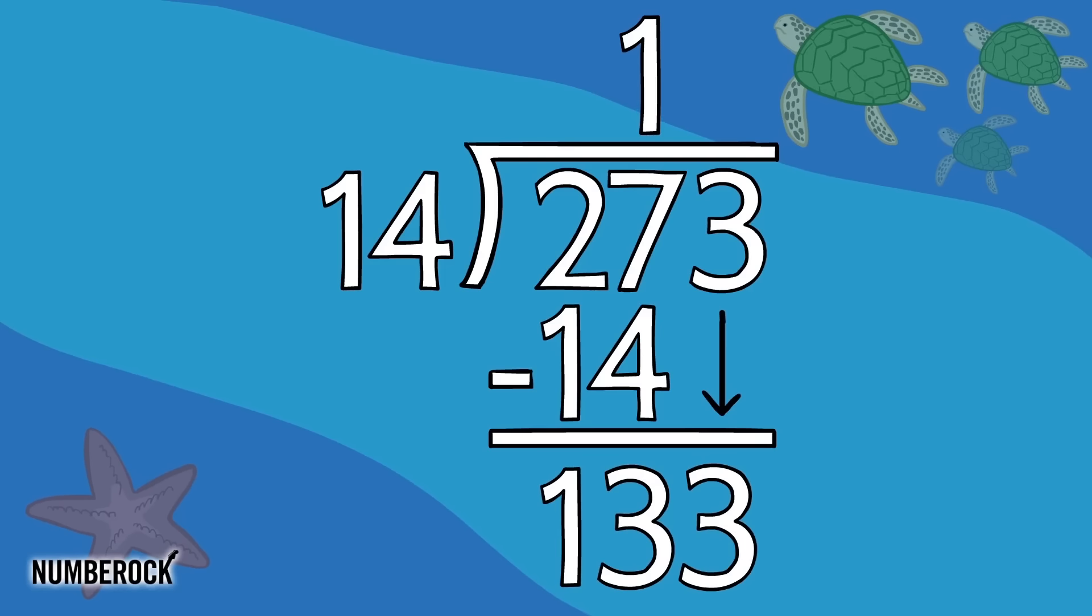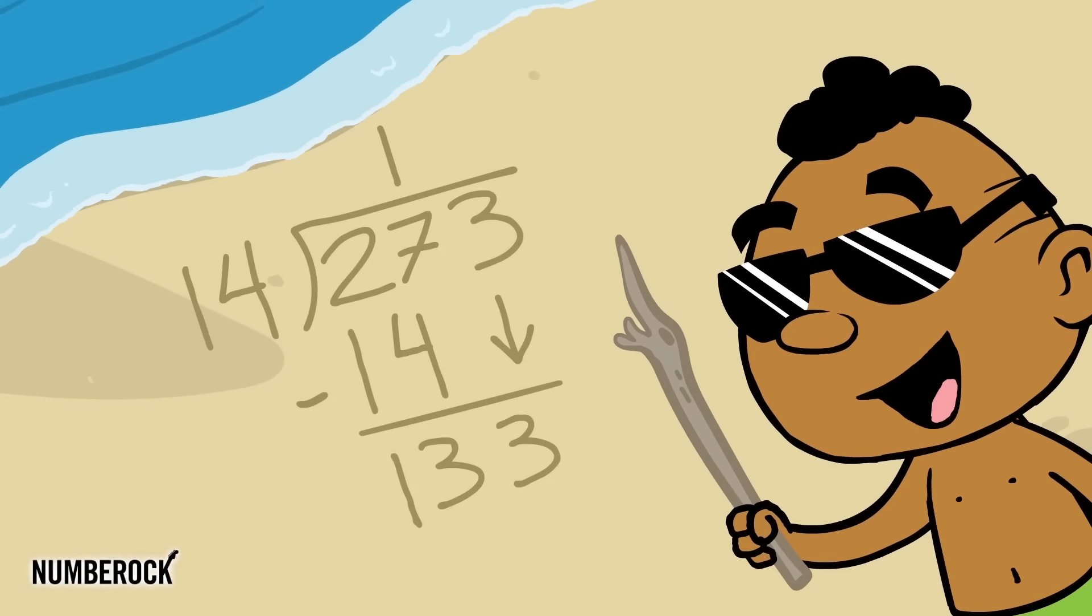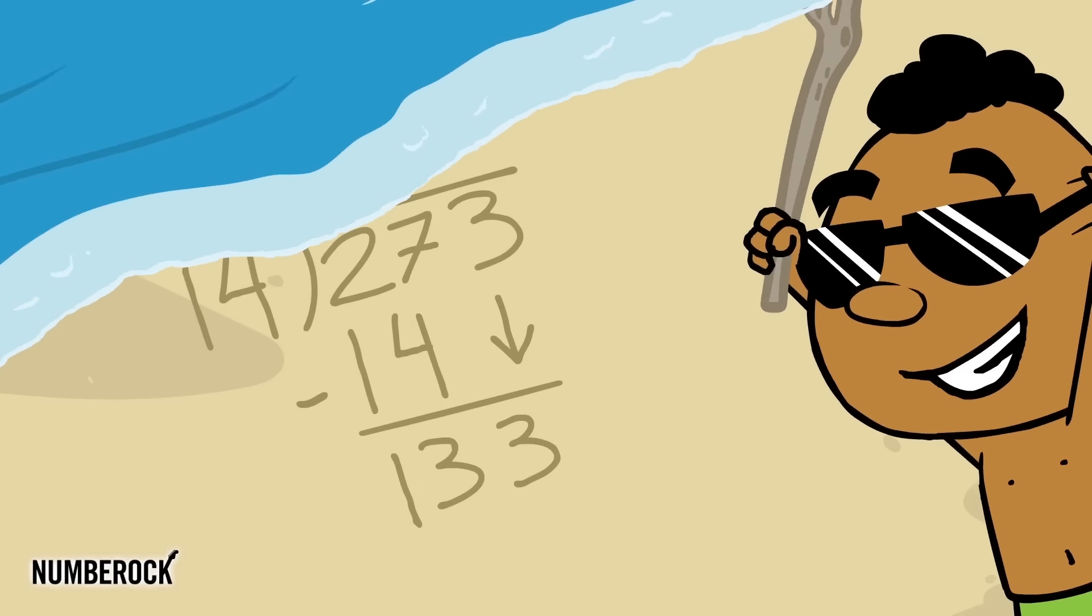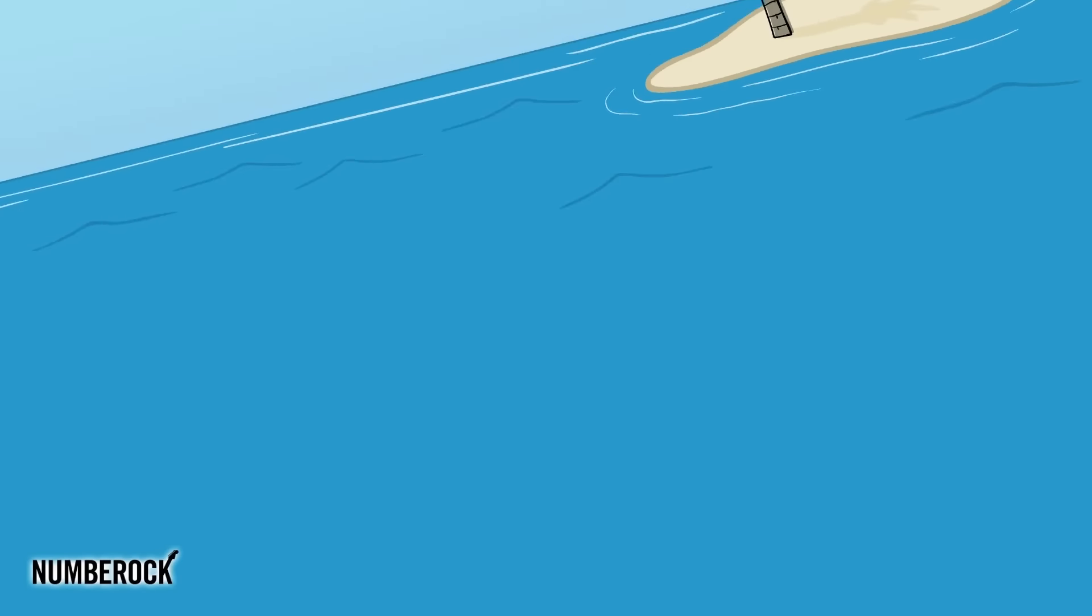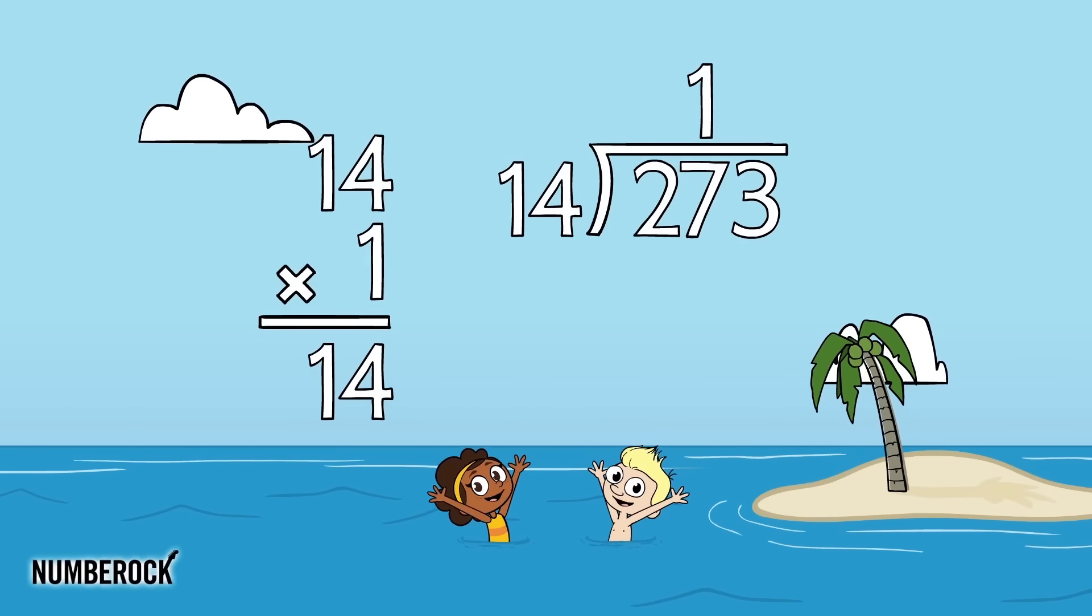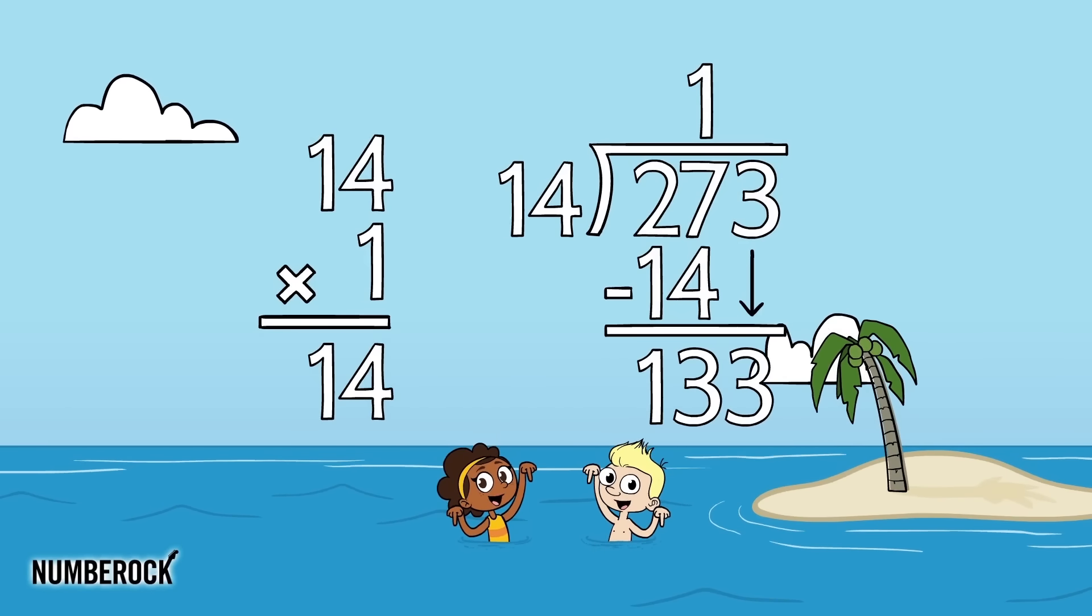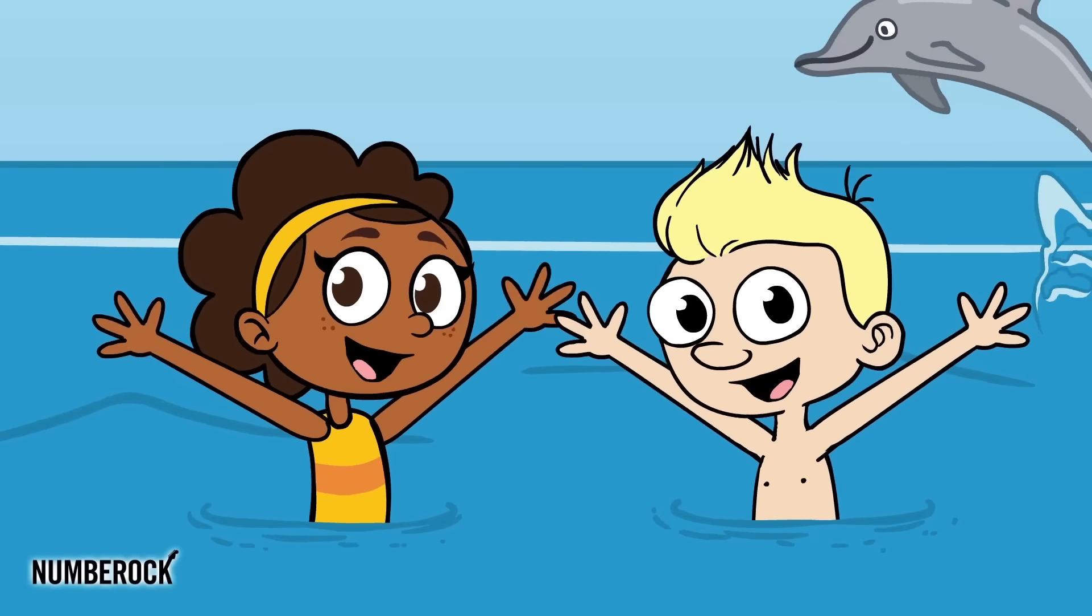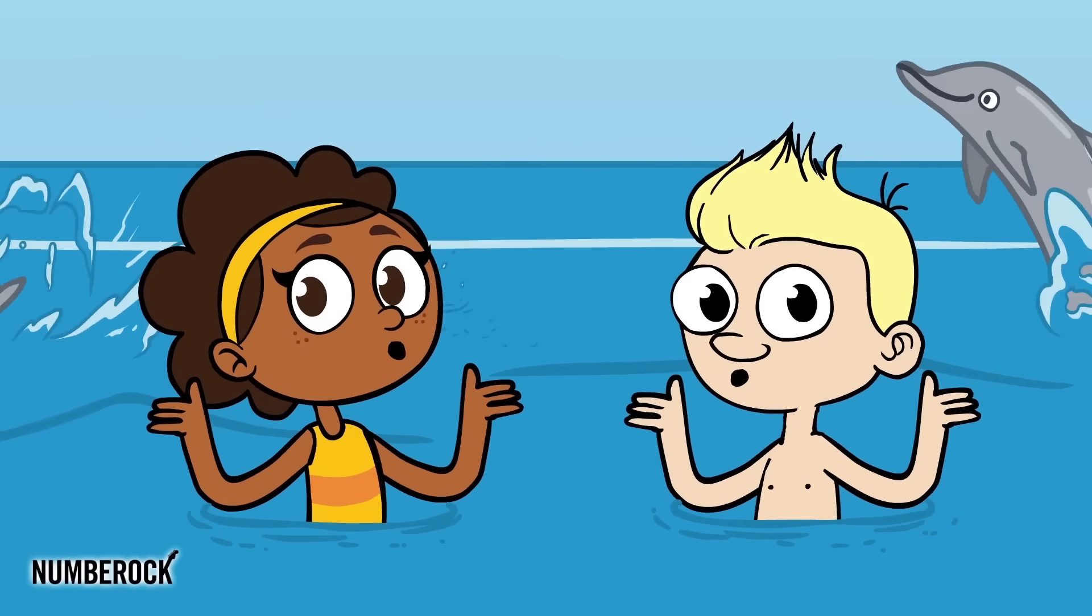Then bring down the 3 and the process will repeat. When we do long division we drop the beat: divide, multiply, subtract, bring down. That's how a quotient is found.